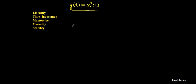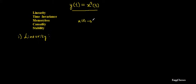We are going to test the system for five different properties. First, we consider the property of linearity. A system is said to be linear if it satisfies the properties of superposition and homogeneity. The system here takes an input x(t) and passes it through operator h to get output y(t). This system performs squaring.